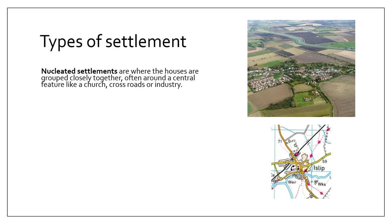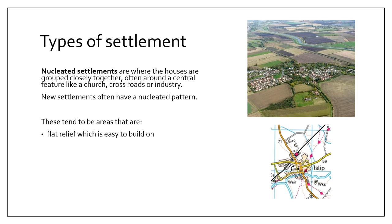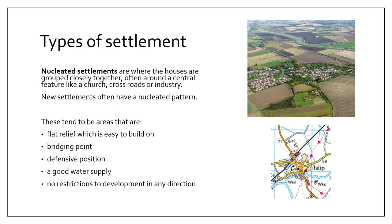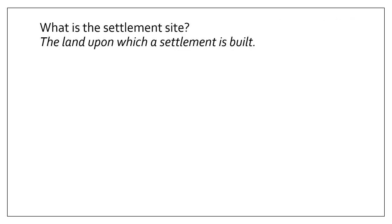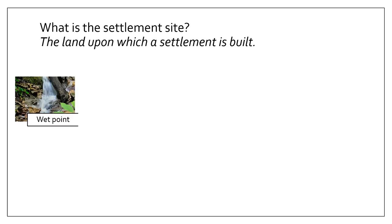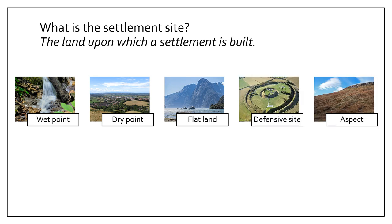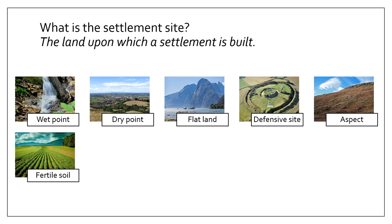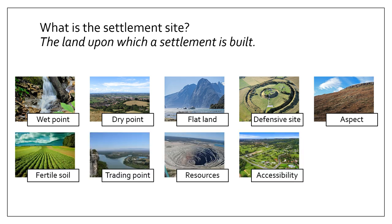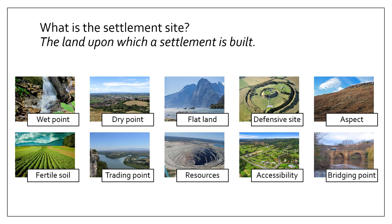Nucleated settlements have houses grouped closely together, often around a central feature like a church, crossroads, or a particular industry. They tend to be found in areas with flat relief because it's easy to build on, possibly at a bridging point, a defensive position, with a good water supply and no restrictions to development. The site refers to the land upon which a settlement is built. Reasons include a wet point — the presence of water — or a dry point, flat land, a defensive site protected by a hill, fertile soil, trading aspects, natural resources, accessibility, or a bridging point across a river.